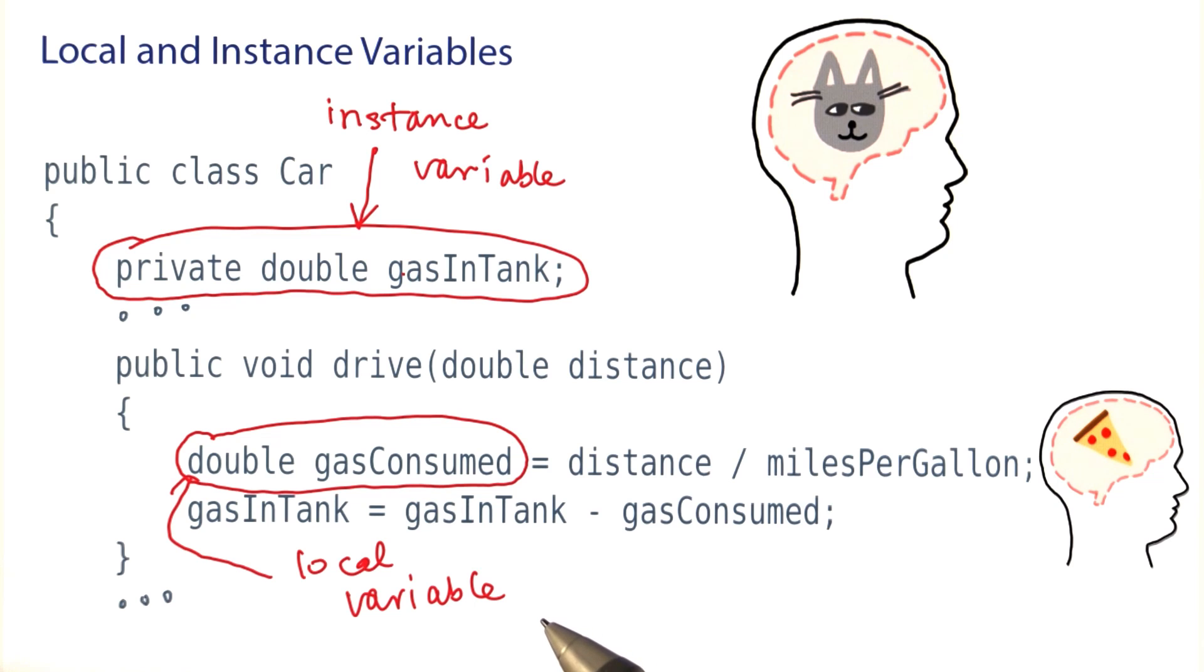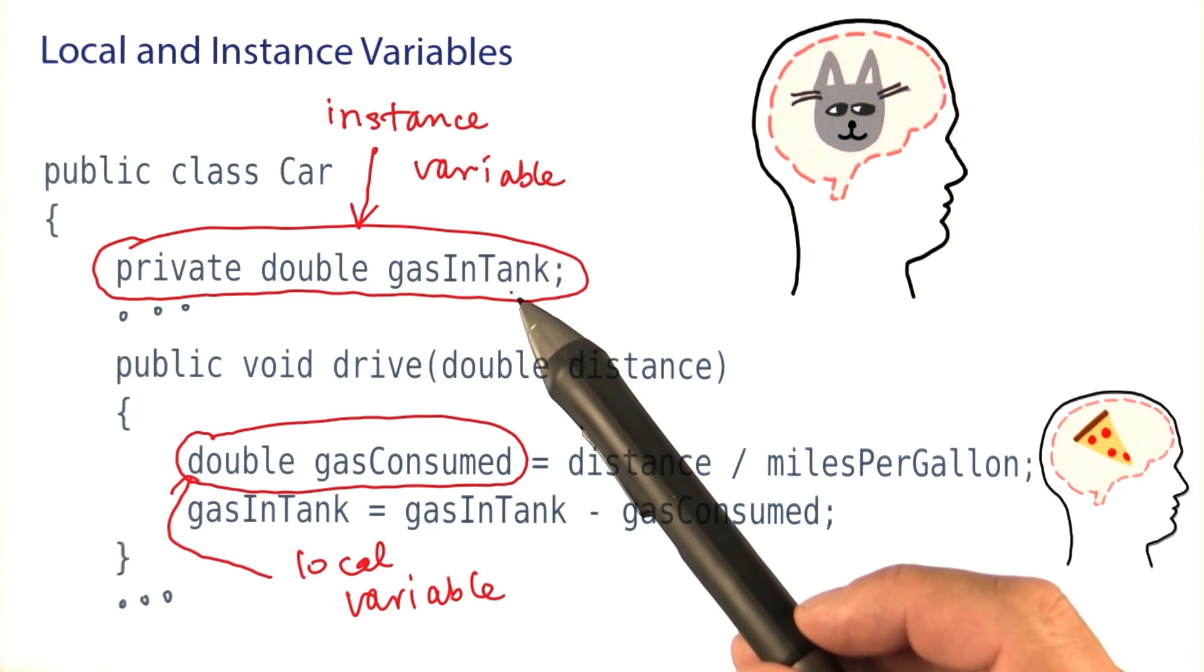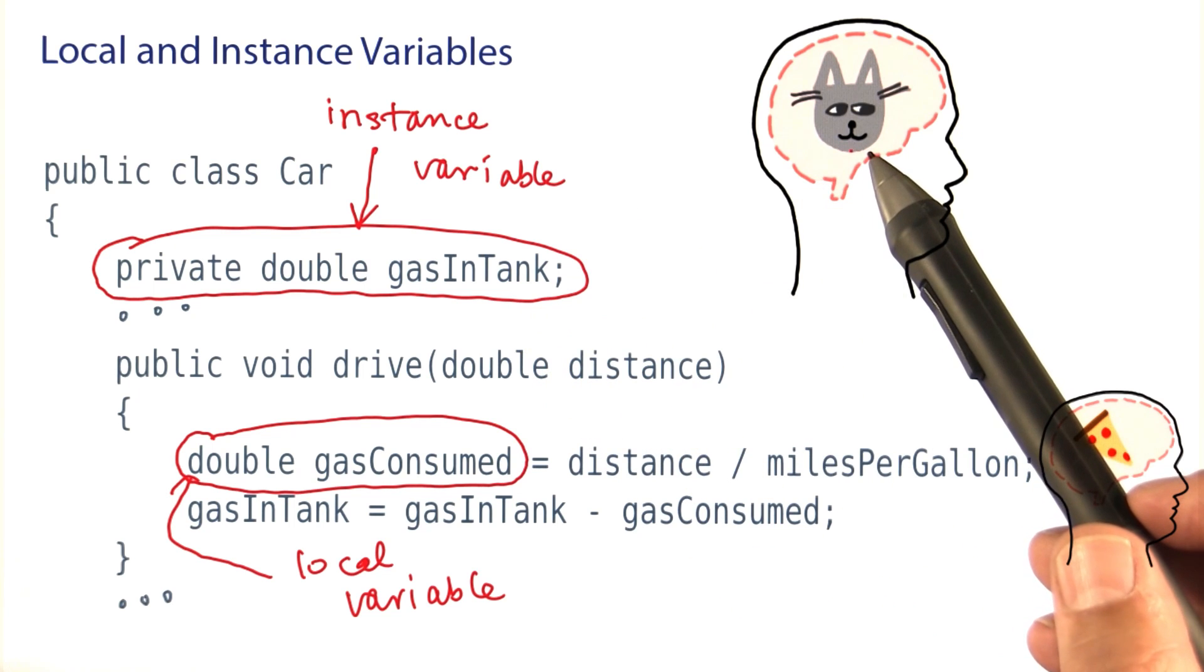So, when do you want to make a variable an instance variable? You want to do that for those values that an object needs to remember throughout multiple methods.